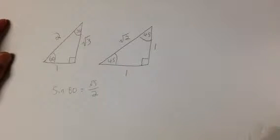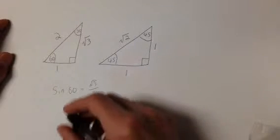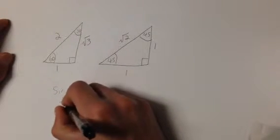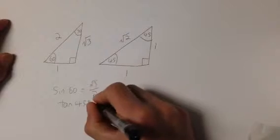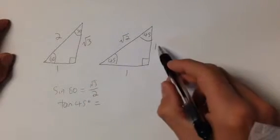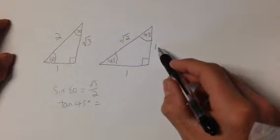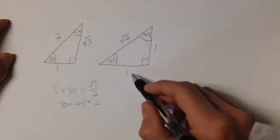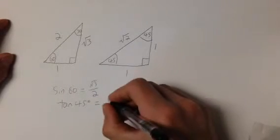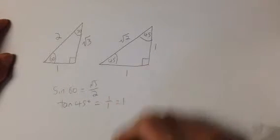As another example, the tan of 45 degrees is opposite over adjacent. Opposite is 1, adjacent is 1, so the tan of 45 degrees is equal to 1.